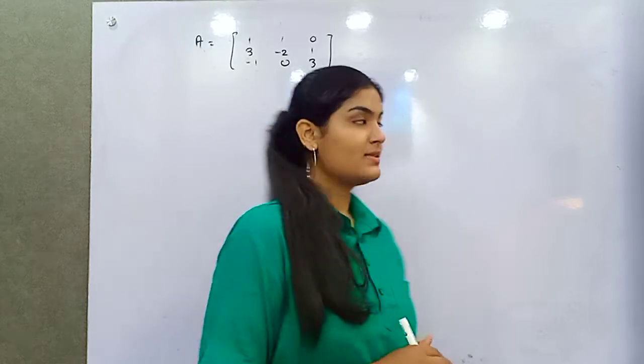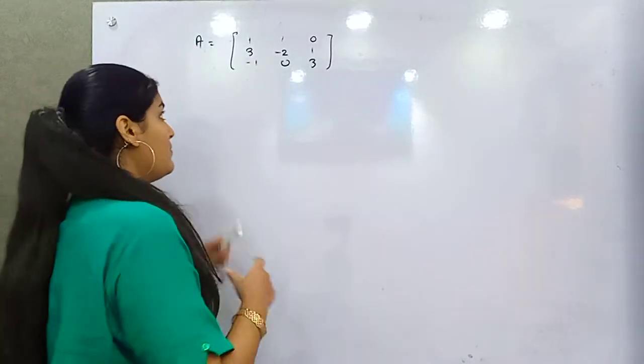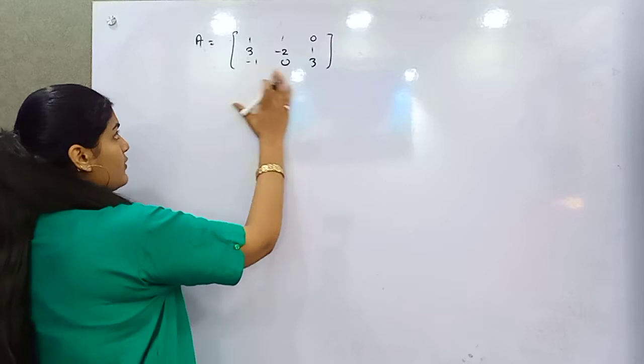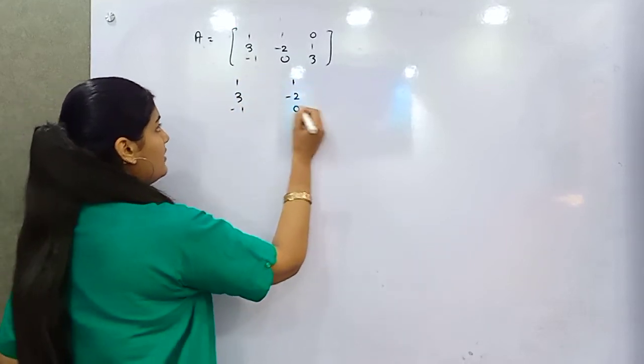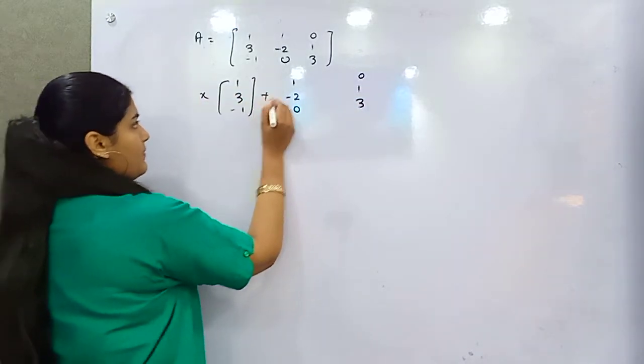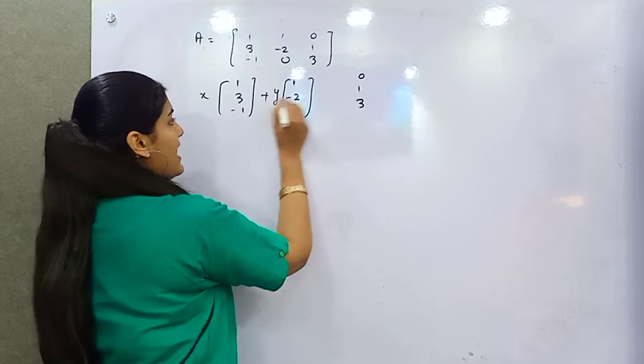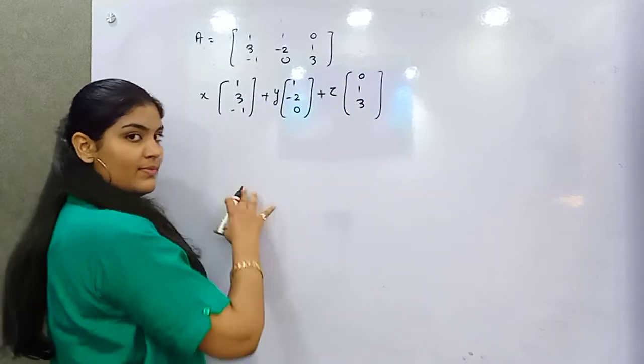Now to make it more clear, let's begin with an example. You can see here you are given with a matrix. Now if you take these columns differently, multiply them with a scalar X, Y, and Z, take the sum and put that sum as 0.